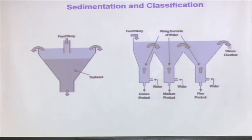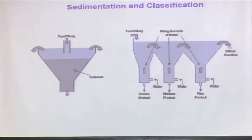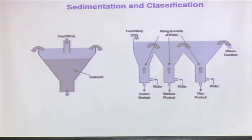Another example: I can have a series of classifiers. Suppose I have a mixture of particles of 100 micron, 60 micron and 20 micron mixed together, and I want to separate them into groups: 100 to 60 micron, 60 to 20 micron, and finer than 20 micron. I pour them as a slurry and inject water in an upward direction.